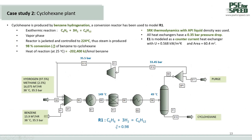The task of the cyclohexane plant is to produce cyclohexane from benzene and hydrogen. The reaction is highly exothermic and occurs in the vapor phase, so steam can be generated by the jacketed reactor. 98% conversion of benzene to cyclohexane can be obtained. SRK thermodynamics with API liquid density was used in this process, and unit E1 is assumed to have a heat exchanger area of 60.4 square meters.